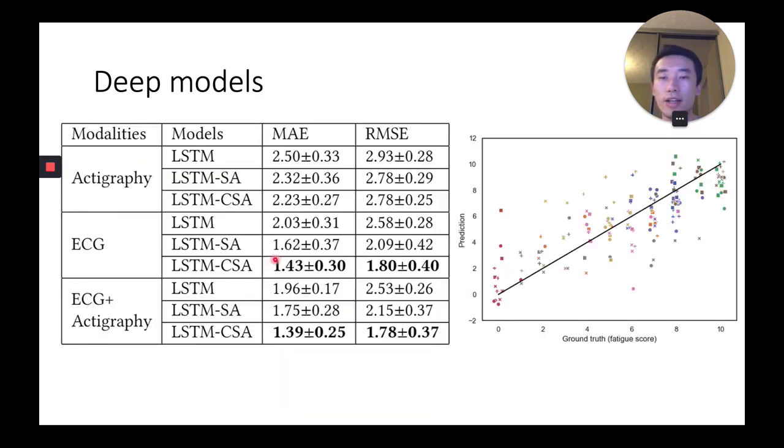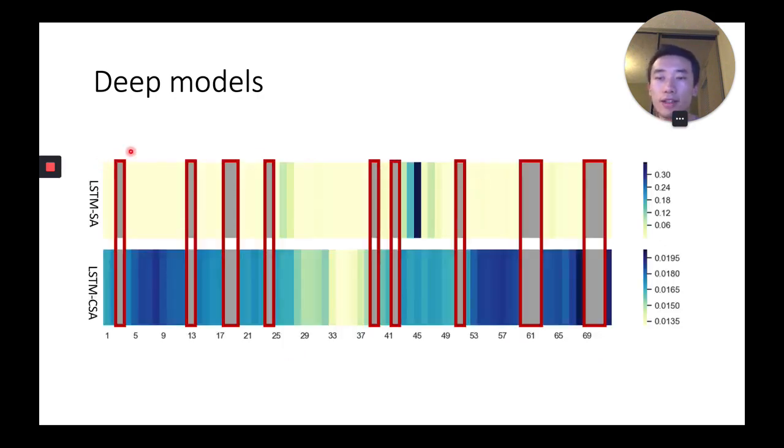Here are the results of our deep learning models. The LSTM with consistent self-attention achieves the best results. This shows the relationship between ground truth and model prediction, and the distribution of attention weights for each time step.